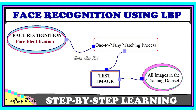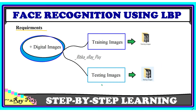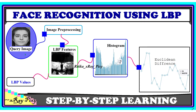Face recognition and face identification is a one-to-many matching process. We match the test image present in the testing dataset with all the images present in the training dataset. If a matching image is found, the image is identified; otherwise it is not. This is the basic operation being followed here.